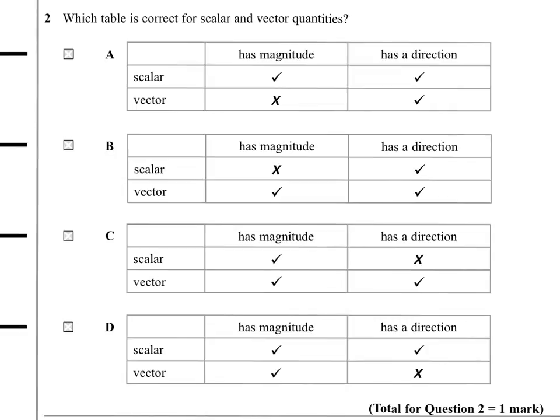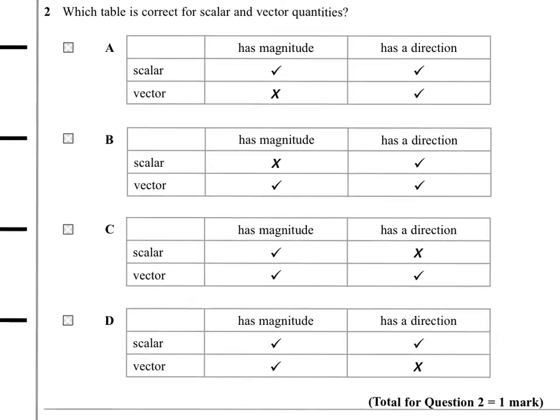Which table here is correct for scalar and vector quantities? Crucially, both scalars and vectors have magnitude, so we can immediately rule out this line and this line.